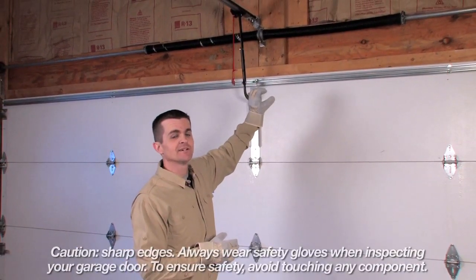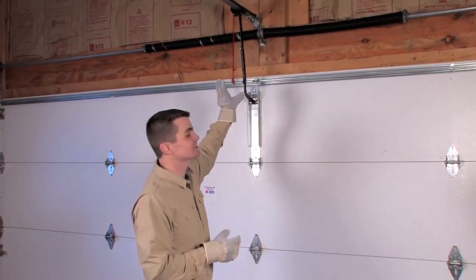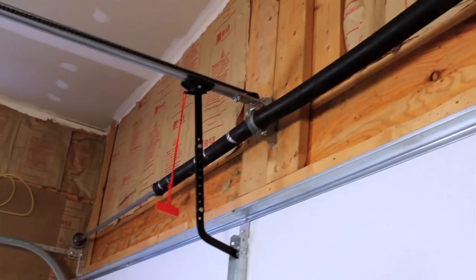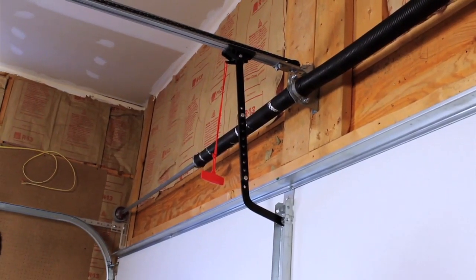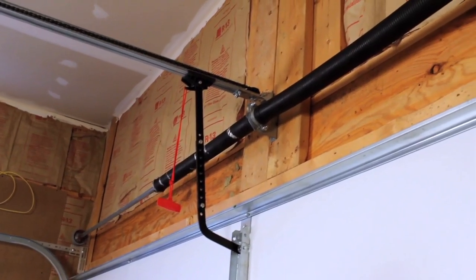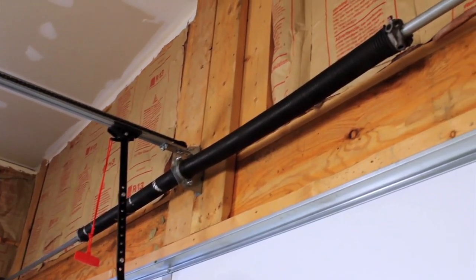What you're looking for here is to visually make sure that the bracket is secure against the wall. This is a critical area and if things look out of line or loose, you definitely want to call a garage door professional.